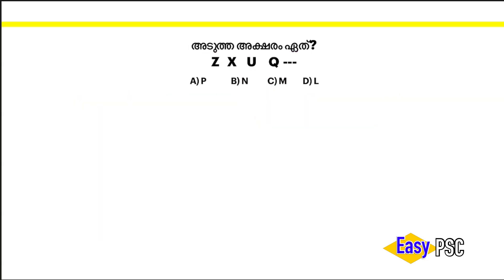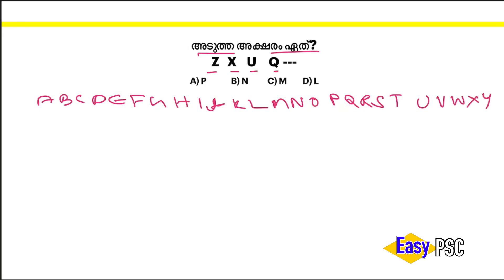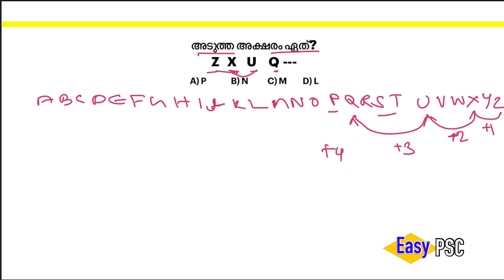The answer is Z, X, U, Q. The answer is Z. We have Z, Z, Z, X. X, X, Y, Y. 2, Q, Q, Q. 3, 4. P, P, 1, O, N, M. This number is L. Option D: L. Answer.